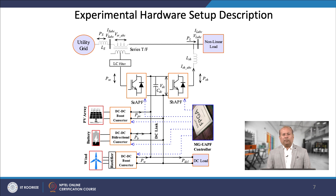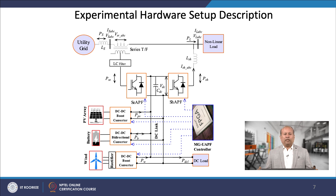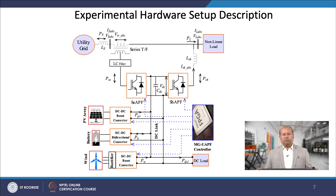At the same time, the shunt active filter behaves as a pure sinusoidal voltage source and offers a low impedance path for harmonics. Therefore, the flow of harmonic current through the grid is effectively blocked. The load fed through a diode bridge rectifier is treated as a non-linear load. For microgrid utilization, the emulated renewable energy sources are connected at the DC link with DC-DC boost converters. In addition, the battery is connected to the common DC link through a bidirectional DC-DC converter.